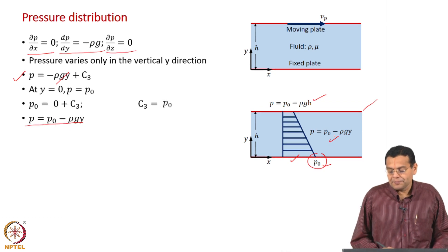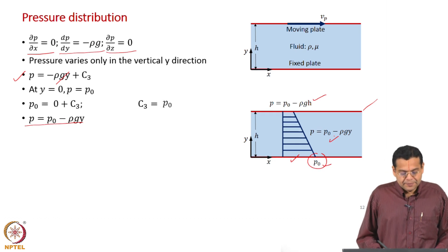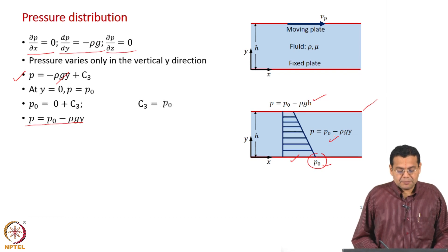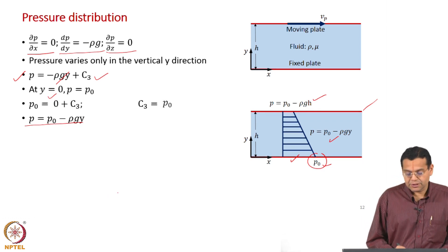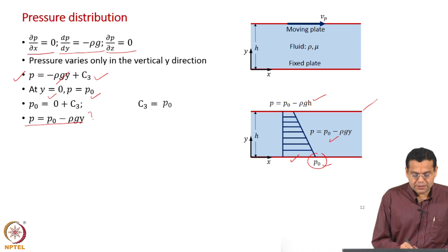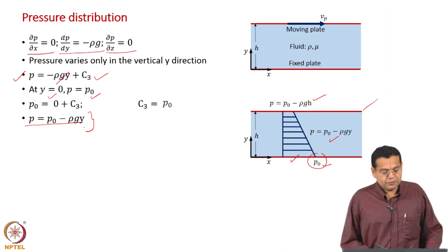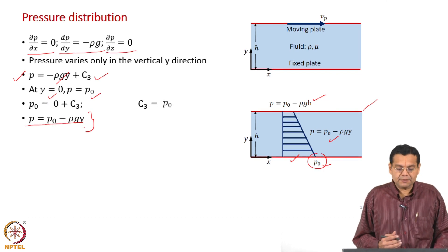Substituting, we get the equation for pressure distribution: p equal to p₀ minus ρgy. This tells you that pressure varies linearly with y — it increases as you go down and decreases as you go up. At the top plate, y equal to h, pressure is p₀ minus ρgh. The distribution is the same as in a static condition — hydrostatic. Also, because the flow is incompressible, absolute pressure has no meaning; we always talk in terms of pressure difference. Pressure is known only up to an arbitrary constant, which is why we specify p₀ at y equal to 0. The expression p minus p₀ equals minus ρgy is the more formal statement applicable for all incompressible flows.